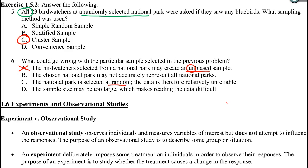C: 'The national park is selected at random, the data is therefore highly unreliable.' Random is good — this just misstates a fact. If something is selected randomly, that actually helps with reliability and representativeness, so C is wrong. D: 'The sample size may be too large, which makes reading the data difficult.' Large data sets could make reading difficult, however we talked to 23 bird watchers — there is zero chance that is too large. And we live in the age of big data, so even 2,300 bird watchers wouldn't make reading the data difficult — that's what a computer is for. So D is also wrong.